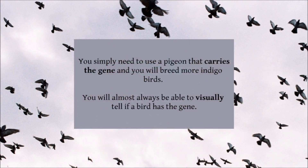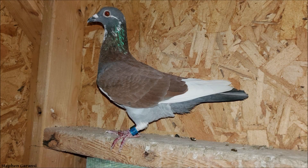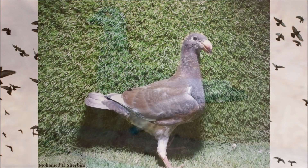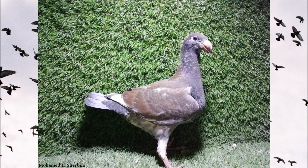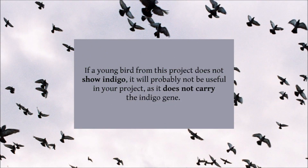So how do you breed Indigo pigeons? Well, as I said at the start, Indigo is a dominant gene. This means it isn't too difficult to reproduce, or even to bring the gene into a new breed. You simply need to use a pigeon that carries the gene, and you will breed more Indigo birds. As it is dominant, you will almost always be able to tell visually if a bird has the gene, unless of course it is hidden by something like white. To bring Indigo into a breed that doesn't yet have it, all you need to do is find an Indigo pigeon and mate it with one of your birds. Then use the Indigo young to grade the colour back into the standard of the bird you're trying to breed. If a young bird from this project does not show Indigo, it will probably not be useful in your project, as it does not carry the Indigo gene.